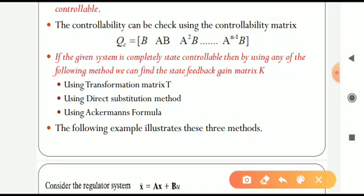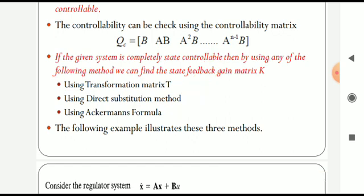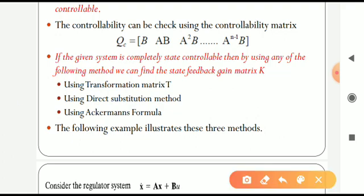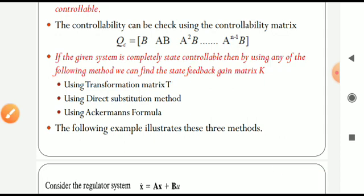If the given system is completely state controllable, we can use any of the following methods to determine the state feedback gain matrix K. The first method uses the transformation matrix capital T — this method is better when the given state space model is in controllable canonical form, and the transformation matrix can be taken as the identity matrix. The second method is the direct substitution method, applicable when the order of the system n is less than or equal to 3.